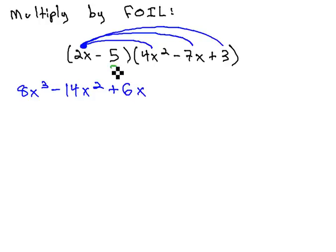Next, we'll take the negative 5 or the second term from the first parentheses and distribute it through the following parentheses. Negative 5 times 4x squared is negative 20x squared. Negative 5 times negative 7x is positive 35x. And negative 5 times positive 3 is negative 15.